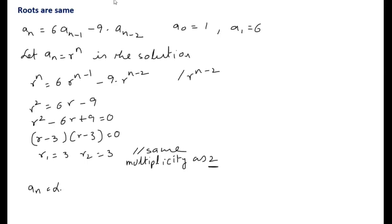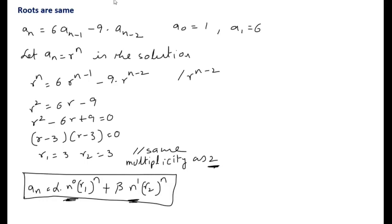When the roots are the same with multiplicity 2, the general solution is aₙ = α·n⁰·r₁ⁿ + β·n¹·r₂ⁿ. We take n⁰ and n¹ because the multiplicity is 2. If the multiplicity were 3, we would add one more term: γ·n²·r₃ⁿ.